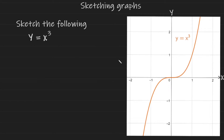In our next example we're going to be looking at cubic graphs. I have the graph up already because I want to explain some important characteristics. For a cubic graph it comes from the bottom left-hand quadrant and it leaves in the top right-hand quadrant. This characteristic is very important and we're going to use it in our next example.